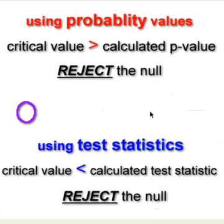So just remember this, that when you're dealing with probability values, the critical value is greater than your calculated p-value, you reject the null. But if you're just going to use the test statistic itself, if the critical value is less than the calculated test statistic, you're going to reject the null. It is easy to get confused here, but that's how you do it. That's it. MGZ out.